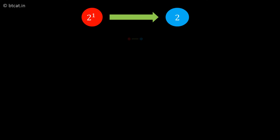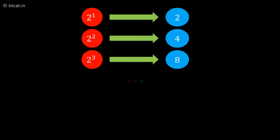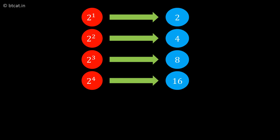2 raised to 1 is 2, 2 squared is 4, 2 cubed is 8, and 2 to the power 4 is 16 with last digit 6. So the last digits are 2, 4, 8, and 6. They have not repeated yet.